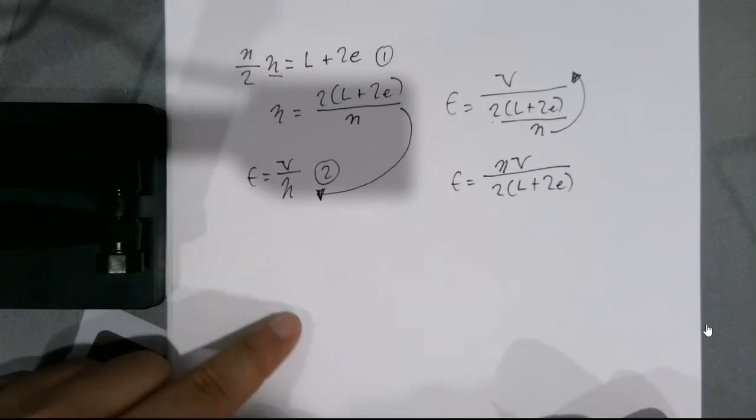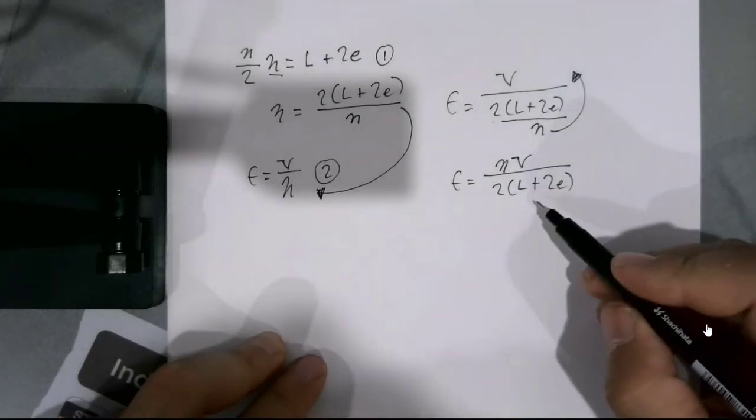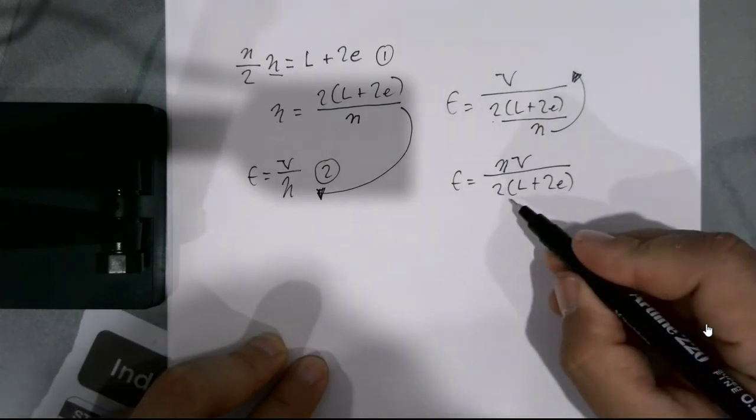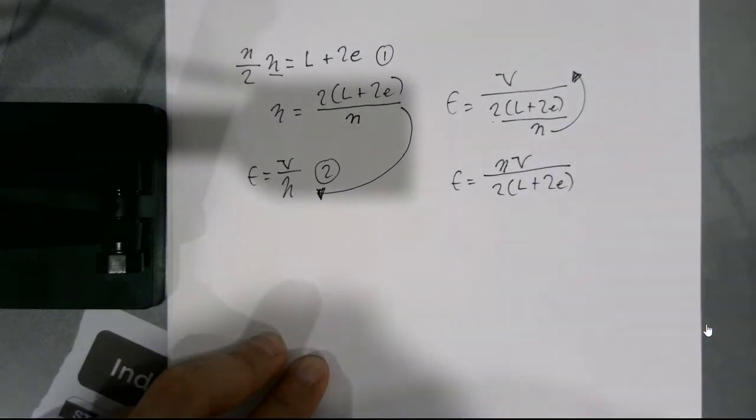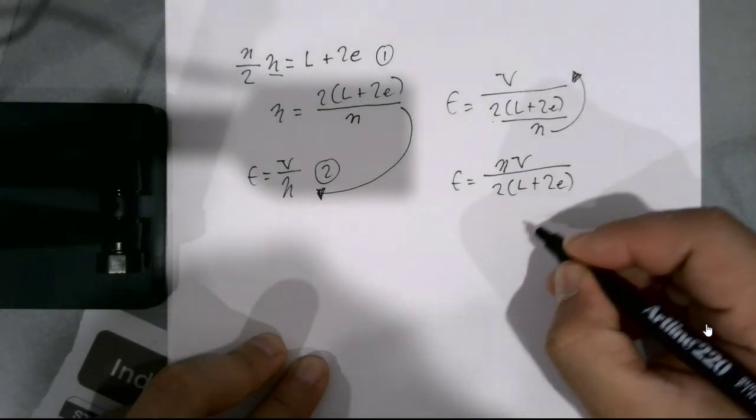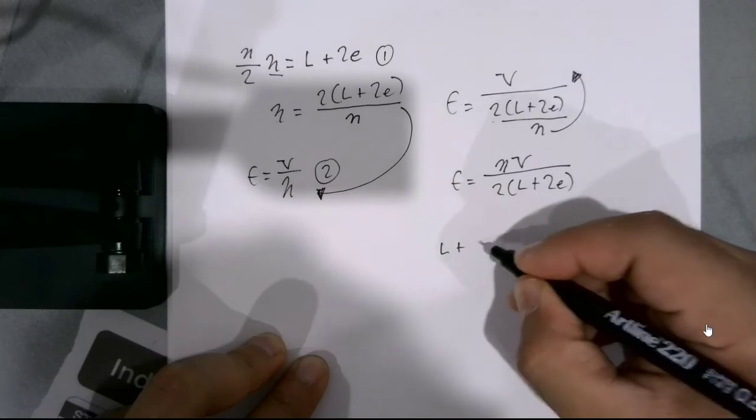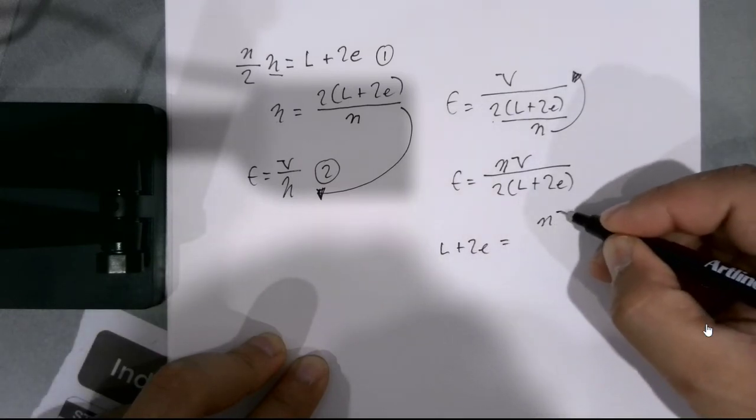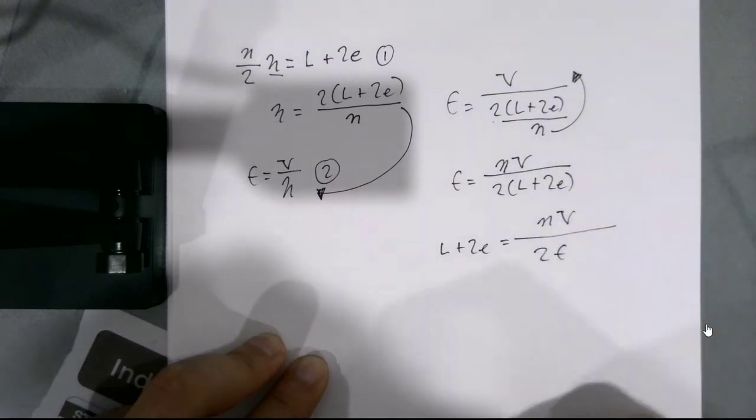Okay. Now remember all this, this expression can be rearranged back and forth for different variables. So for example, if you wanted to solve for the length, we can simplify this. We can say, swap these around. So we get L plus two E is equal to n times V divided by F.